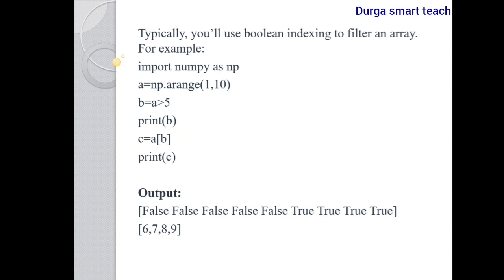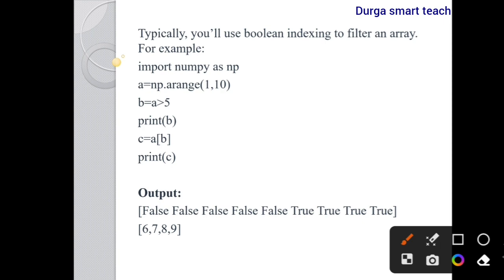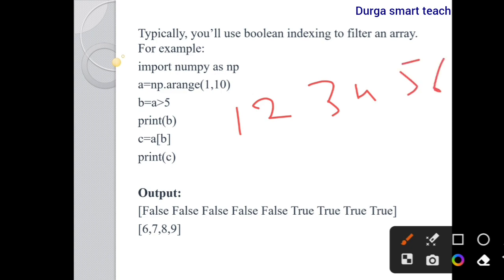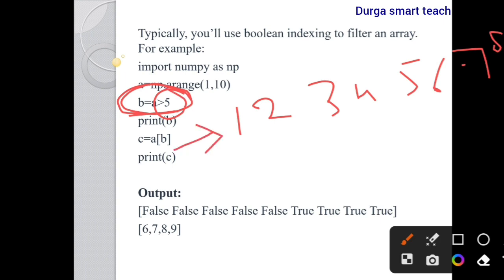Let's take one more example. Import numpy and create a = np.arange(1, 10), which gives [1, 2, 3, 4, 5, 6, 7, 8, 9]. Next, b = a > 5. So for each element: 1 > 5 is False, 2 > 5 is False, 3 > 5 is False, 4 > 5 is False, 5 > 5 is False, 6 > 5 is True.